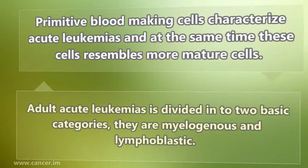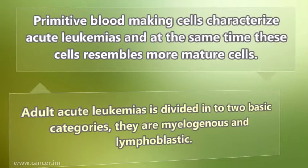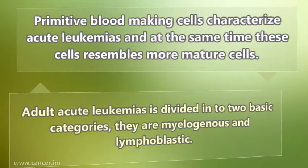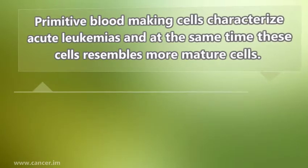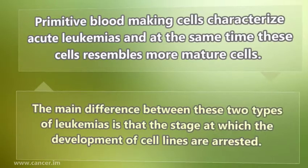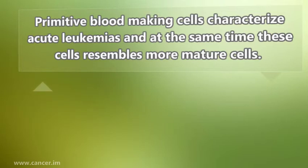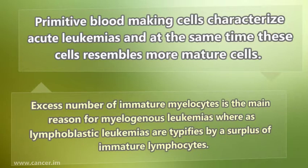Adult acute leukemia is divided into two basic categories: myelogenous and lymphoblastic. The main difference between these two types is the stage at which the development of cell lines is arrested. Excess number of immature myelocytes is the main reason for myelogenous leukemia, whereas lymphoblastic leukemia is typified by a surplus of immature lymphocytes.